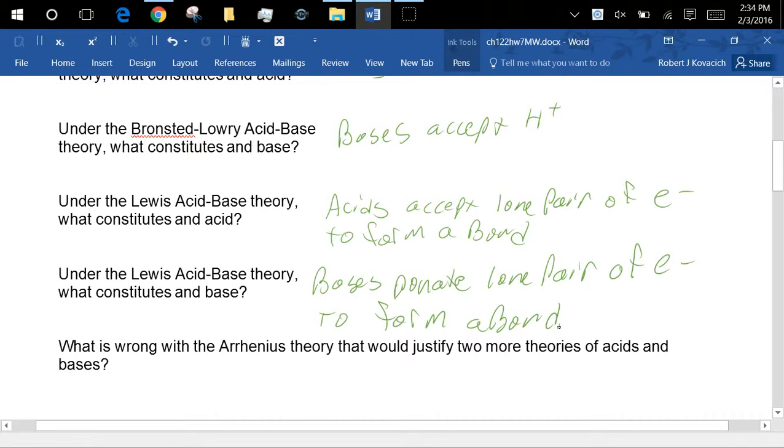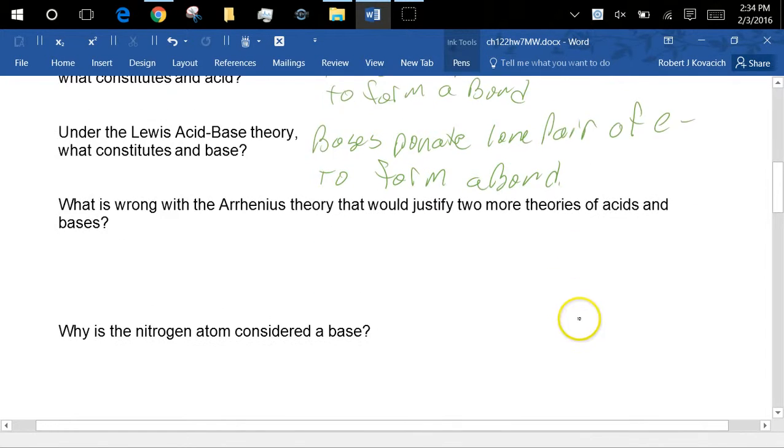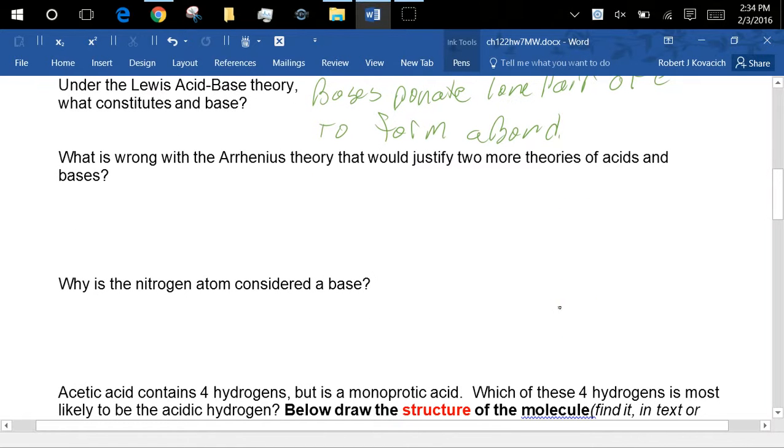Donating and accepting lone pairs of electrons to make bonds. What's wrong with that Arrhenius theory that you need two more definitions?